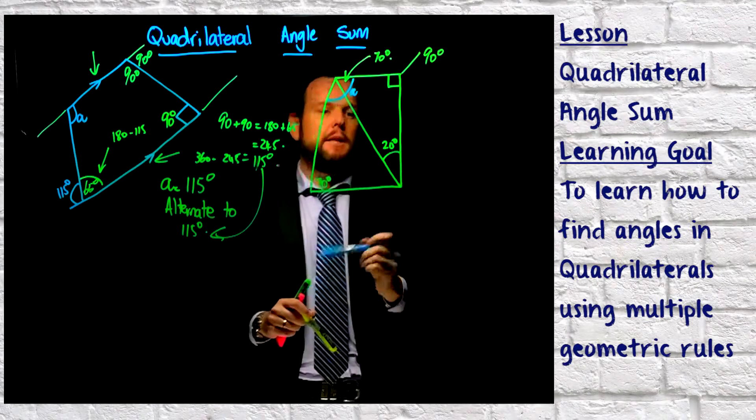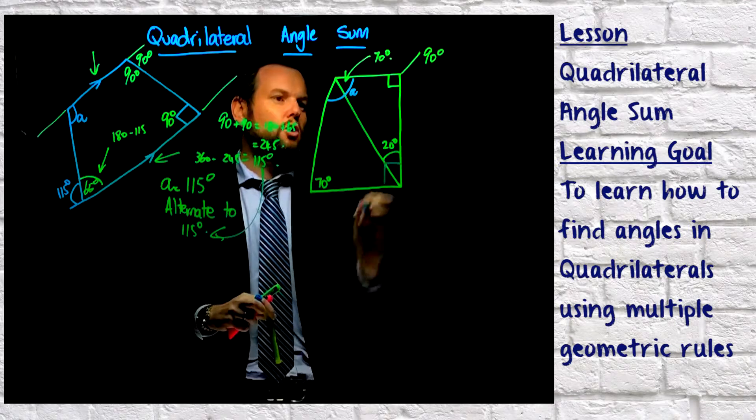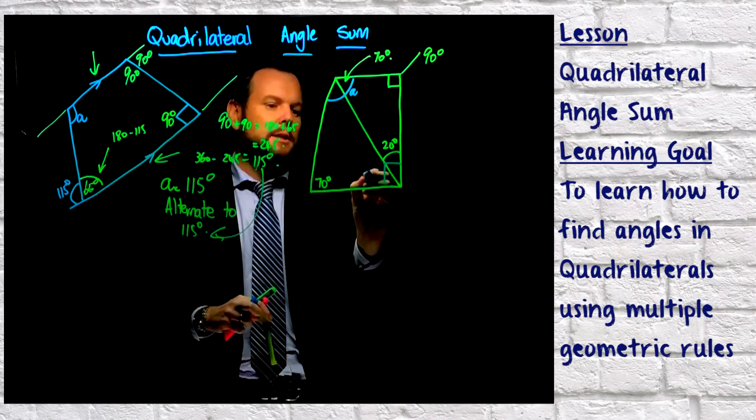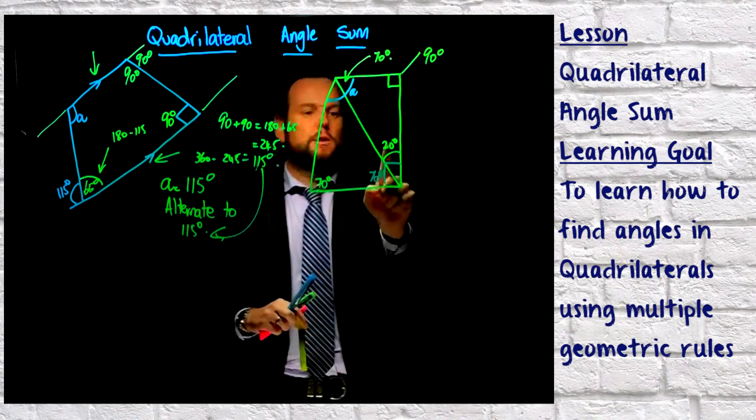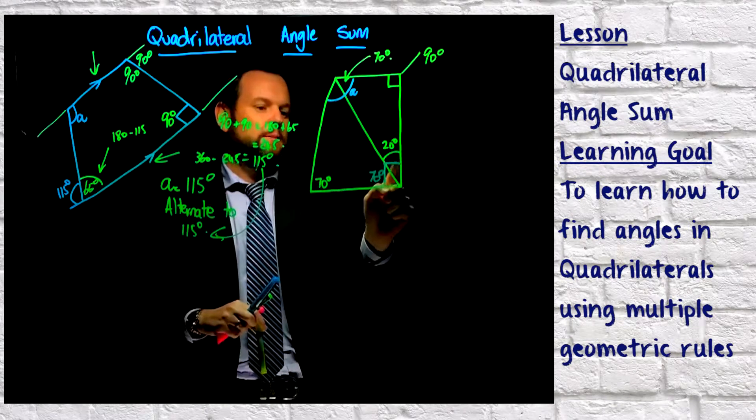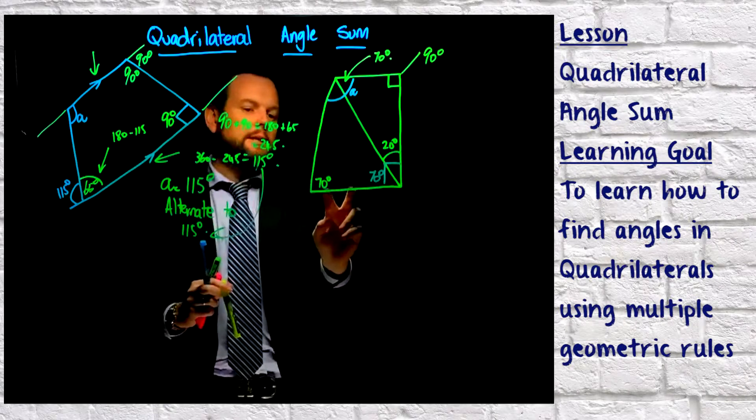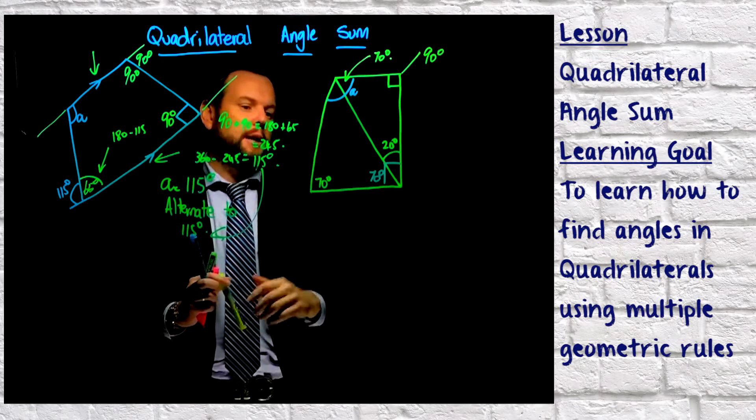Now the game changer here is that this down here is also a right angle. So we've got two straight lines that meet with a straight line. So this here is also going to be 70 degrees, because 70 plus 20 gives me 90, which makes our right angle. And then basically, I can add these up, and I can find what this angle up here is going to be.